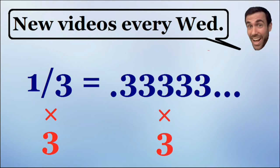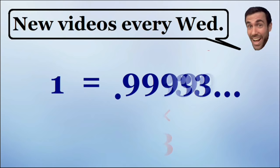Now if we multiply both sides of this equation by 3, on the left hand side we have 3 times one third which is equal to 1, and on the right hand side we have 3 times 0.333... repeating which is equal to 0.999... repeating. As you can see from this equation, 0.999... repeating is indeed equal to 1.